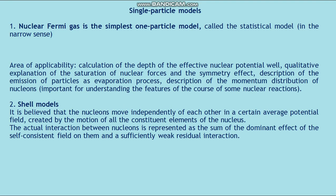Single-particle models. First: the nuclear Fermi gas. In this simplest model, called the statistical model, the nucleus is treated as an ideal Fermi gas of non-interacting nucleons. The volume of the gas is assumed equal to the volume of the nucleus, but surface effects are not taken into account. Areas of applicability: calculation of the depth of the effective nuclear potential well, qualitative explanation of the saturation of nuclear forces and the symmetry effect, description of particle emission as an evaporation process, and description of the momentum distribution of nucleons.